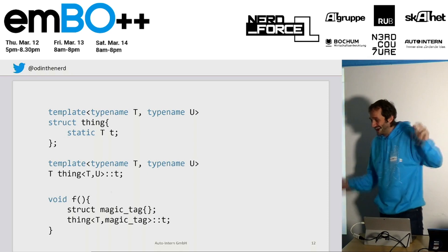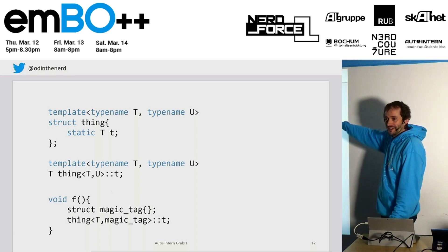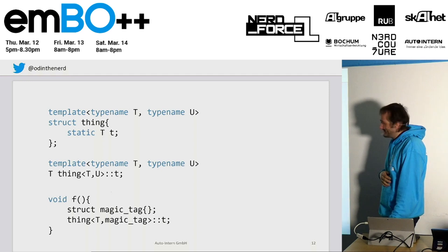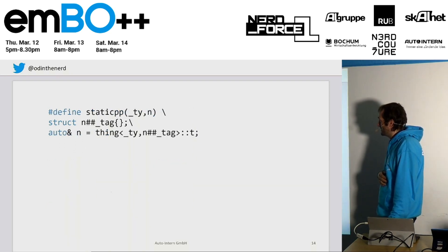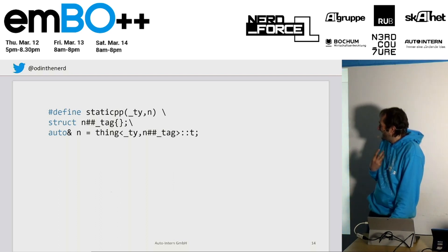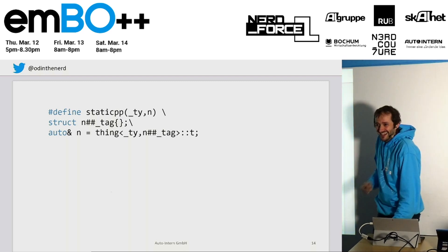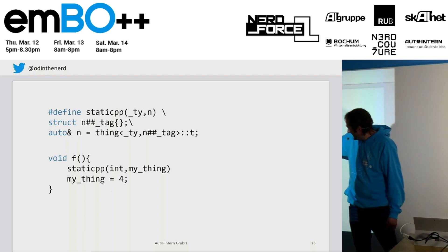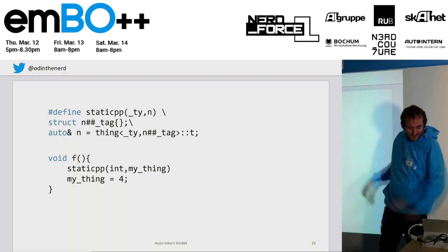You can declare classes within functions — I didn't know about this much before, but you can put a class declaration inside the function, and then nobody else has that magic tag type so they can't get at the static. Now it's local again. But not everyone likes templates, so we hide it with a macro called 'static++' — the better static. You can use this macro to define, say, an int called my_thing, and then use my_thing as a reference to that static.